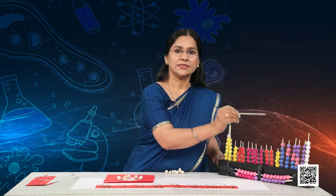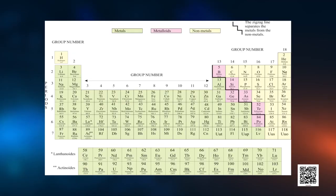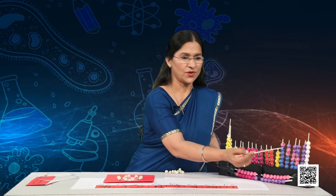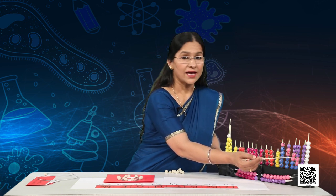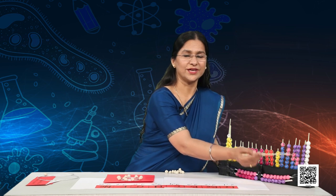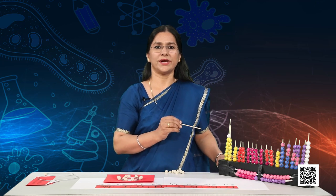Silicon exhibits some properties of both metals and non-metals. In the modern periodic table, a zig-zag line separates metals from non-metals. The borderline elements — boron, silicon, germanium, arsenic, antimony, tellurium, and polonium — are intermediate in properties and are called metalloids or semi-metals.